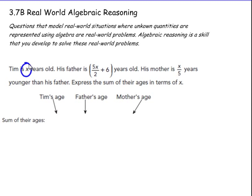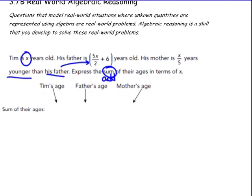So Tim is X years old. His father is 5X over 2 plus 6 years old — that's another expression representing Dad. And his mother is X over 5 years younger than his father, so his father is going to be part of the mother's expression as well. She's younger, meaning X over 5 is taken away from the dad's age. So express the sum — sum means add — of their ages in terms of X.